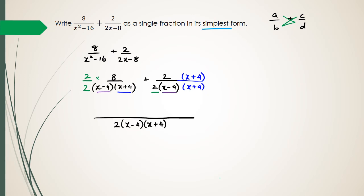So now I could have the denominator as one big fraction, and that one big fraction is going to be 2 times x minus 4 multiplied by x plus 4. And as for the numerator, I've actually got 2 times 8, which is the left-hand side, plus 2 times x plus 4, which is the right-hand side.